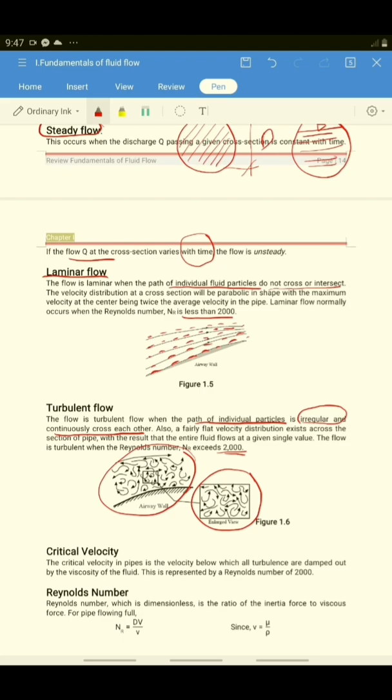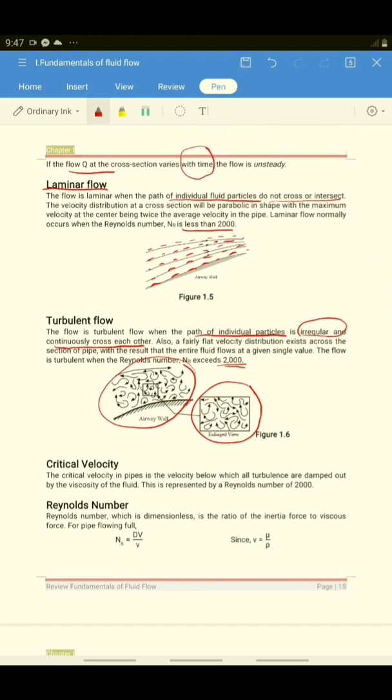For the critical velocity, the critical velocity of the pipes is the velocity below which all the turbulence are damped out by the viscosity of the fluid. So here, the Reynolds number at the critical flow is equal to 2,000.